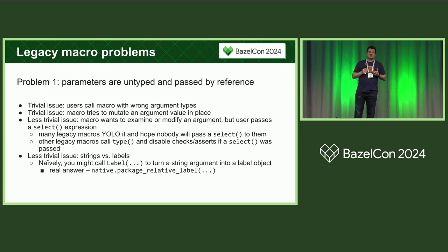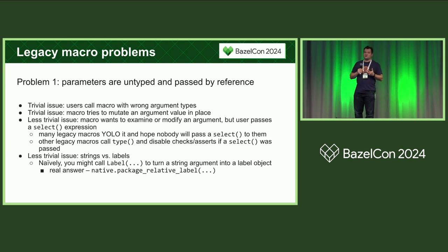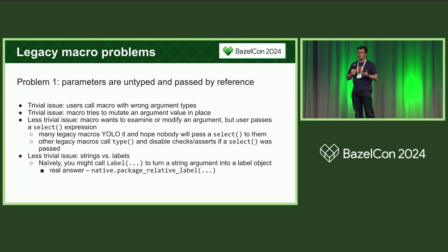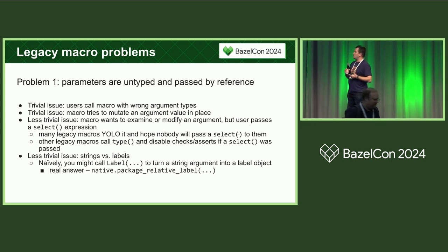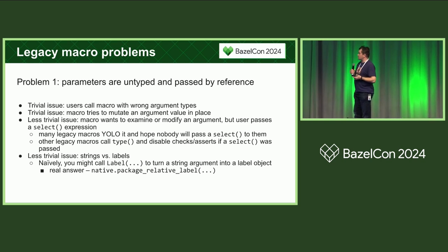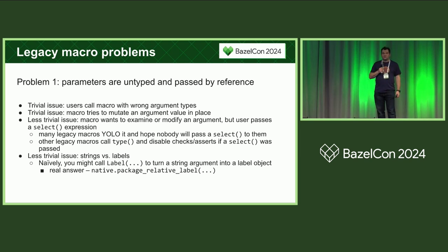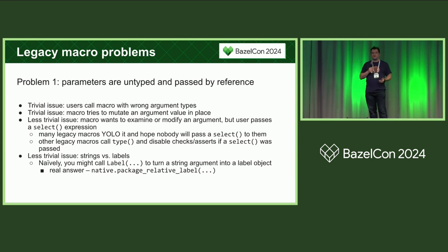Let's say your macro is expecting a list of labels which it expects to examine or modify in some way. But instead of a list of labels, your user passes a select expression which, once configured, is going to evaluate to a list of labels. Currently in Starlark, you cannot examine or modify the contents of a select expression. Some macros just YOLO it and hope that nobody will pass a select to them, and other macros change their behavior depending on whether the parameter is a select value or not, which is not ideal either.